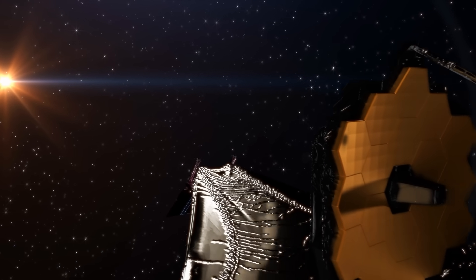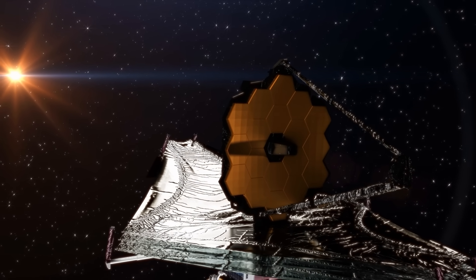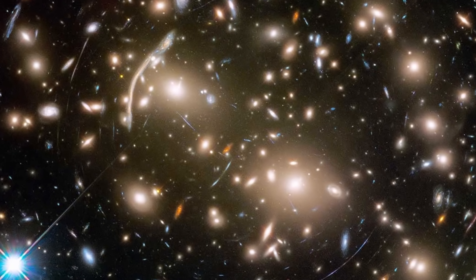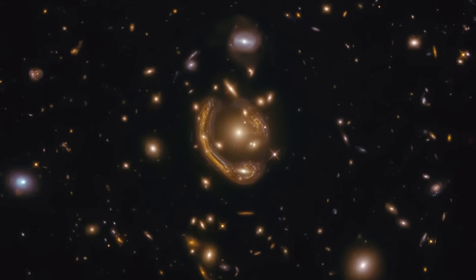Now the supernova has already faded from view in the two latter pictures, so it didn't really give us a lot of new information. But it shows the power of the telescope and how we can use gravitational lensing to zoom into a single object in the universe and potentially view them at multiple different moments in time.